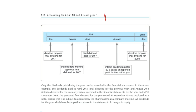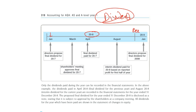One quick video on dividends — how they are declared and how they are paid. We are talking about 2018, starting in January and ending in December, with 2019 January shown as well. In January 2018, directors propose the final dividend for 2017. Before 2017, there was a profit, and based on that profit, directors propose a dividend in January 2018.